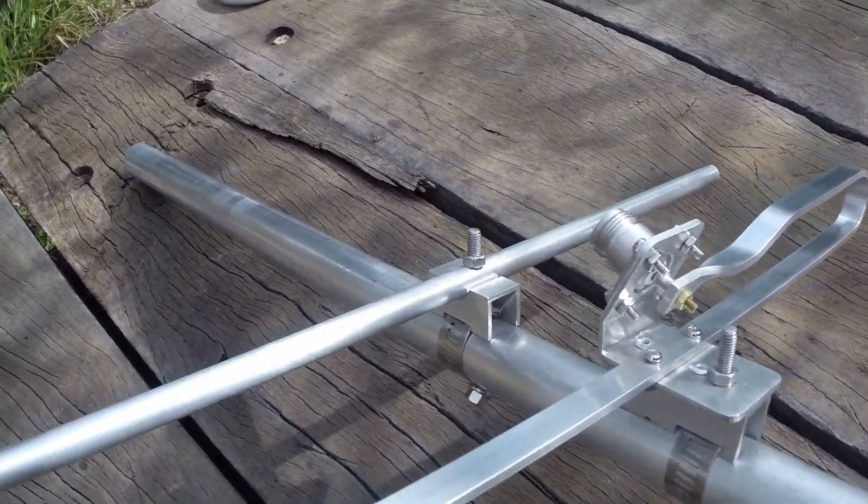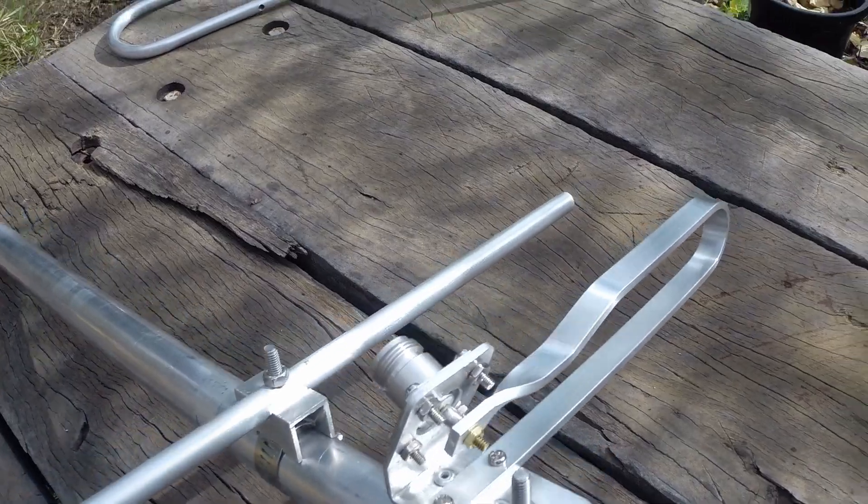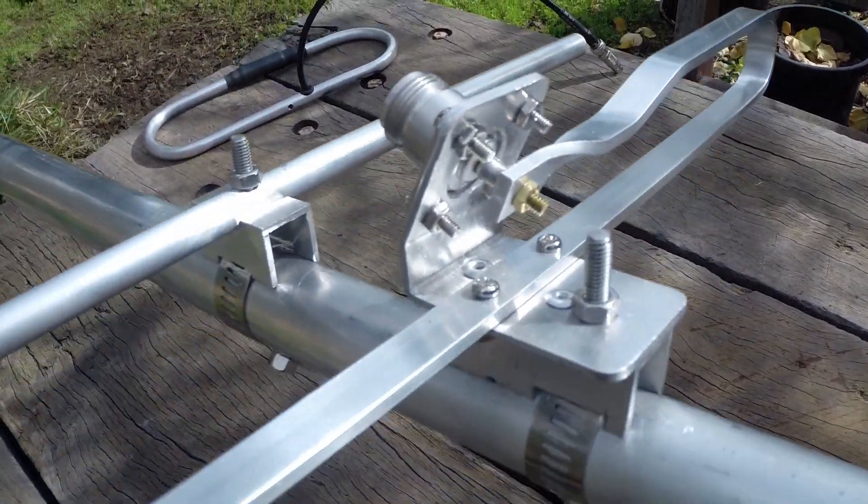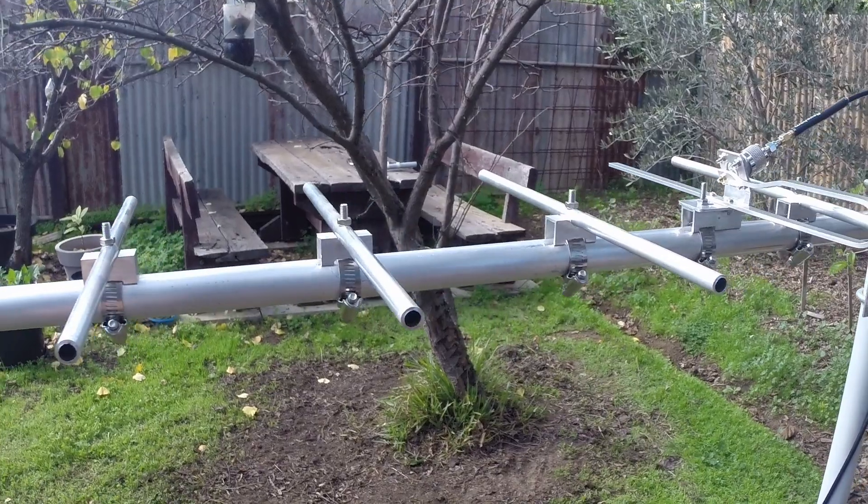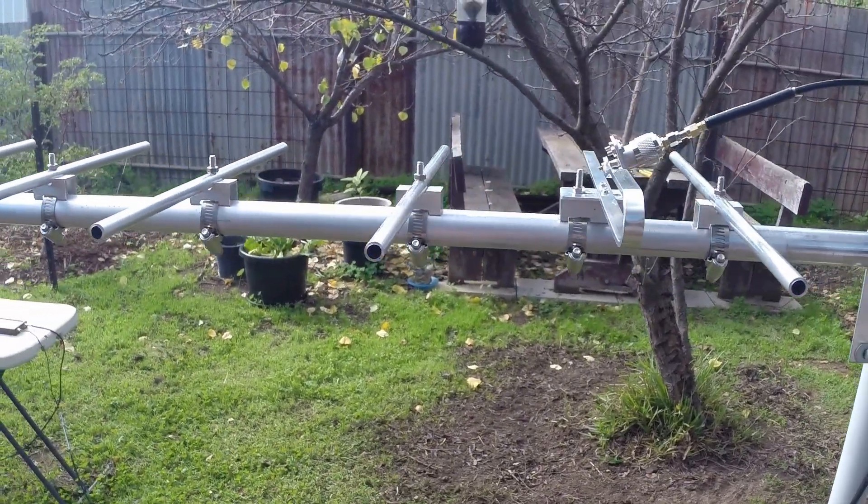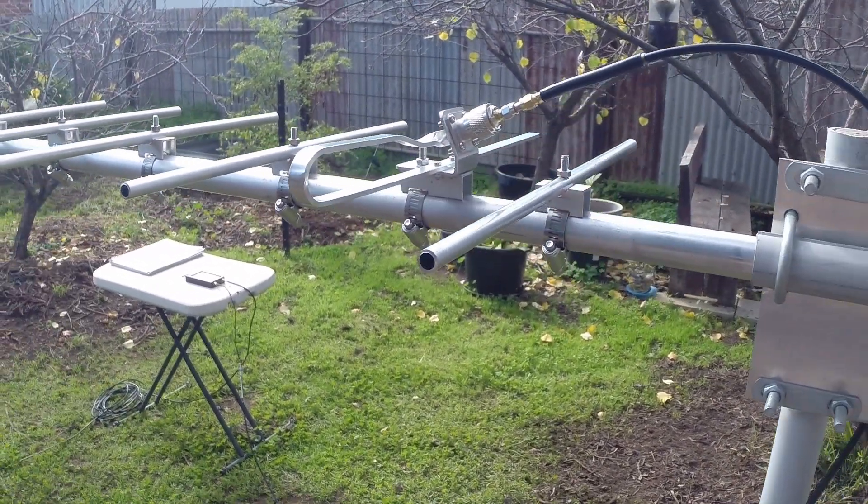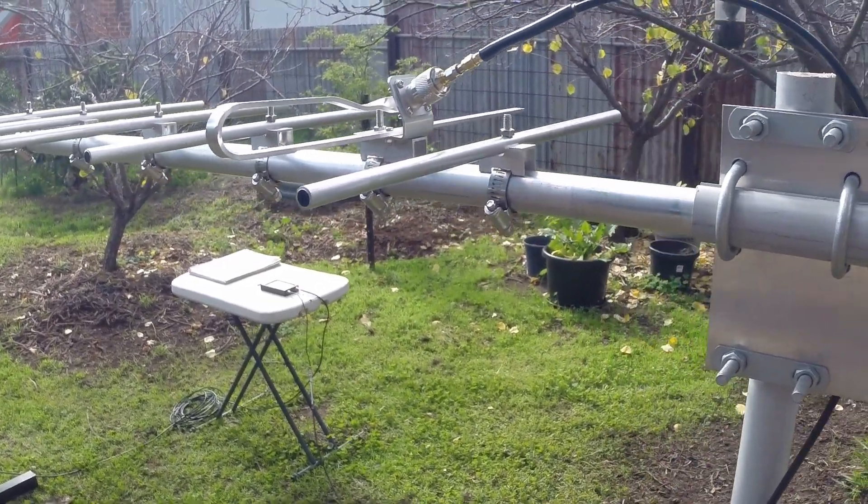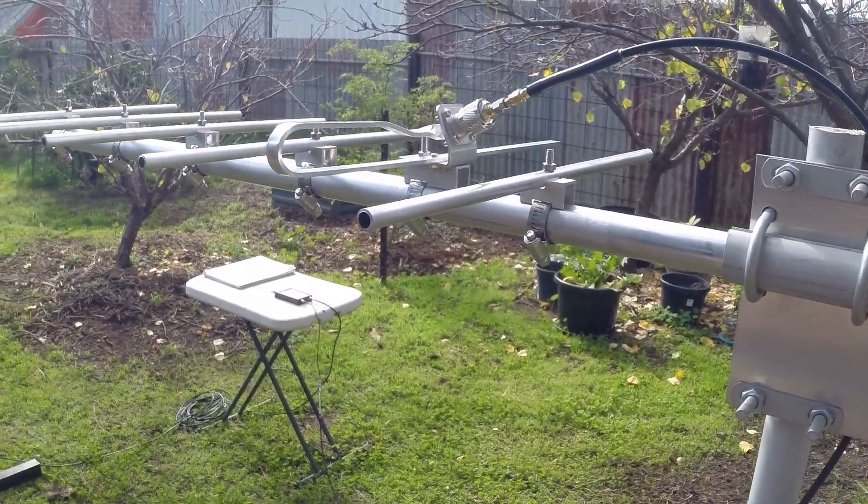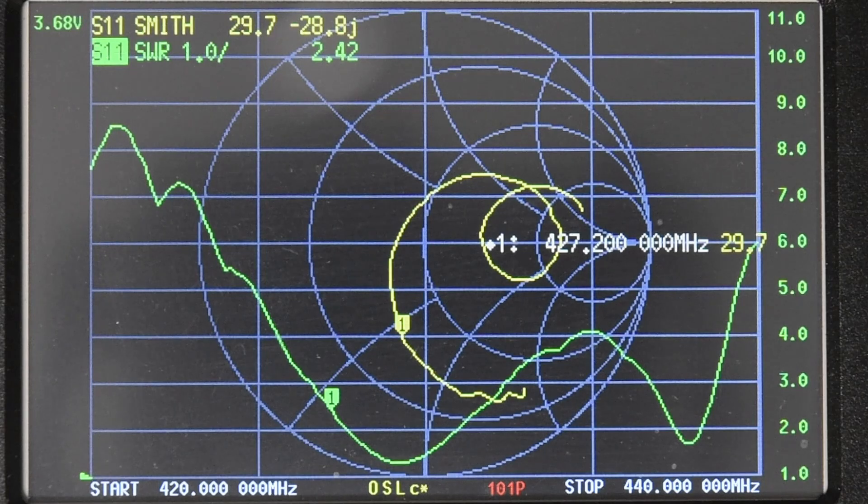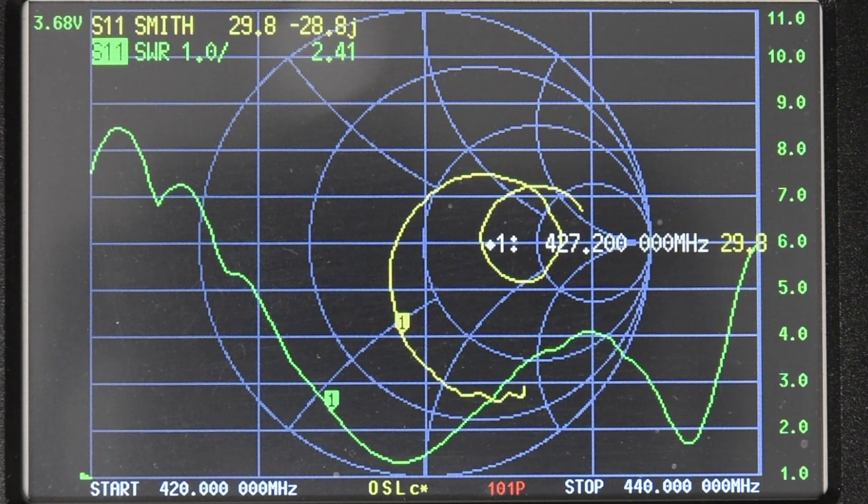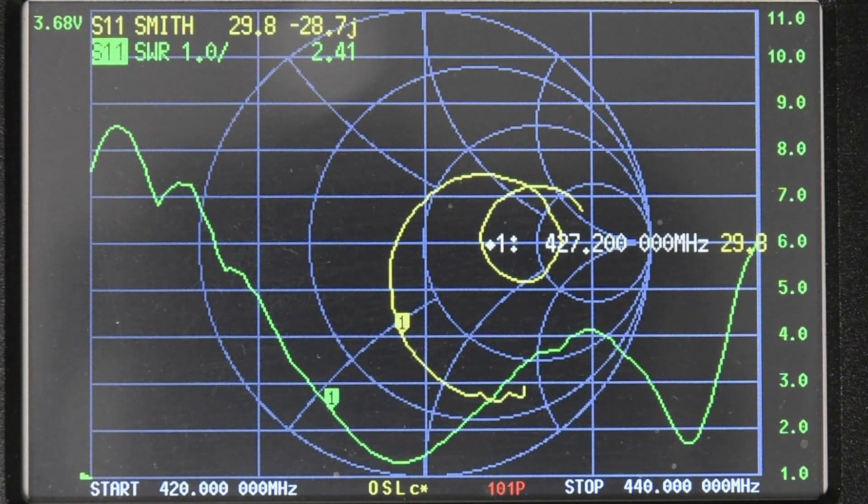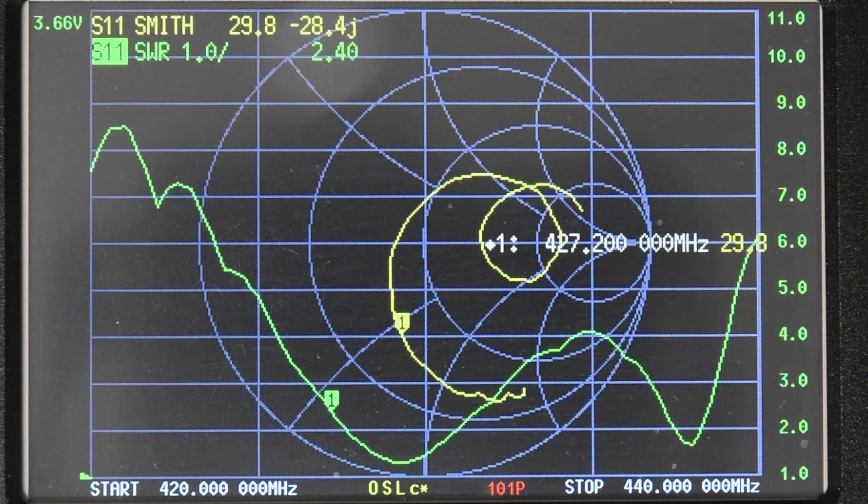And so now we're going to move on to testing the antenna with the J driven element. I'm now connecting the nanoVNA to the Yagi with the J driven element or half folded dipole. The nanoVNA has been calibrated up to the point of attachment. So we are looking at the antenna impedance.